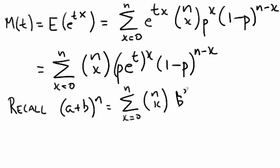b to the x, a to the n minus x. And so what we have here is the binomial expansion.